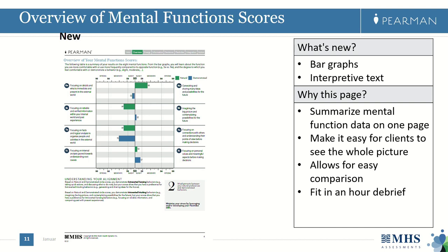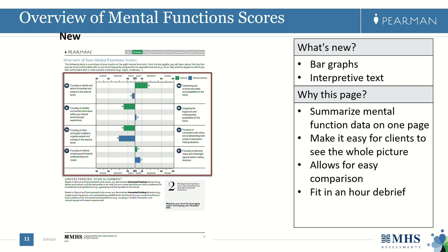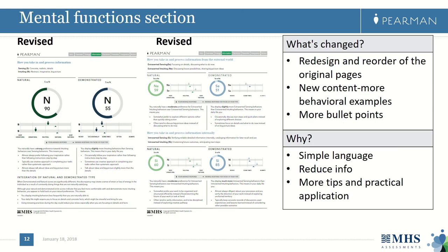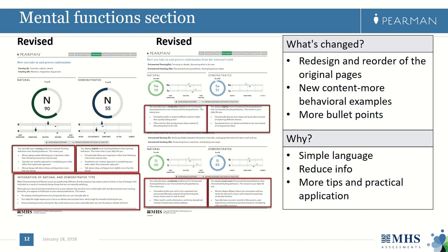This overview of mental functions page can serve as a landing page for coaches to spend most of their debriefing session on, with the option to refer to individual detail pages afterward. The page has two main sections: a bar graph at the top, and interpretive text at the bottom that discusses misalignments between natural preferences and demonstrated behaviors. For the mental function section overall, we redesigned and reordered all of the original pages, simplified the content, added more behavioral examples, changed the format to more bullet points, and added more tips and practical application. We hope these changes solve the problem of complexity in the mental function section.